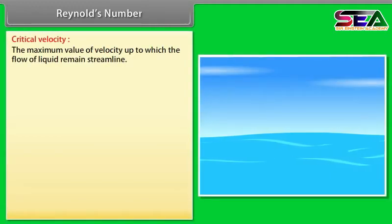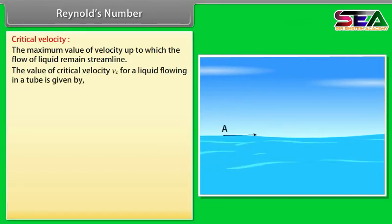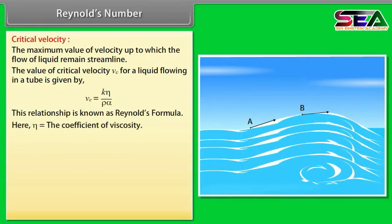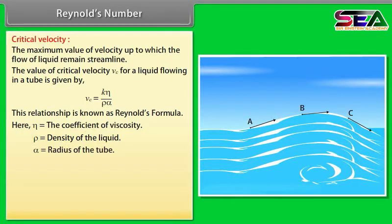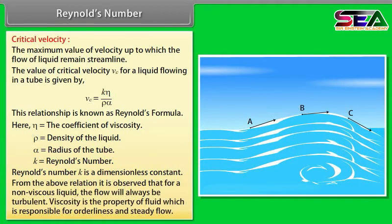Reynolds number: Critical velocity is the maximum velocity up to which the flow of a liquid remains streamlined. Its value for a liquid flowing in a tube is given by V_c = K × η / (ρ × r), known as Reynolds' formula, where η is the coefficient of viscosity, ρ is the density of the liquid, r is the radius of the tube, and K is the Reynolds number — a dimensionless constant. It is observed that for a non-viscous liquid the flow will always be turbulent. Viscosity is the property of a fluid responsible for orderliness and steady flow.